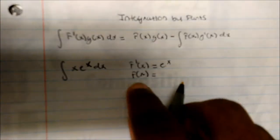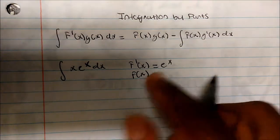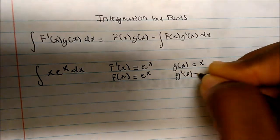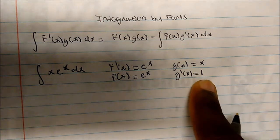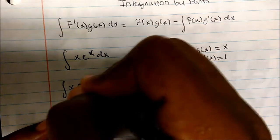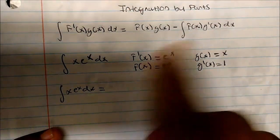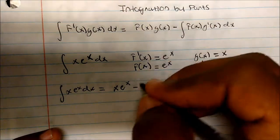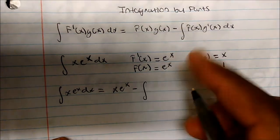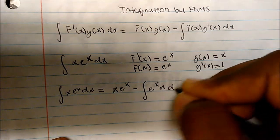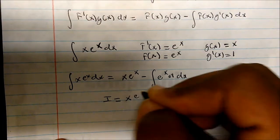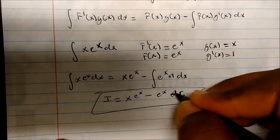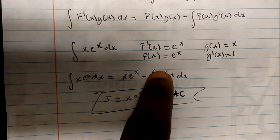f of x is the antiderivative of whatever you chose to be your derivative. The antiderivative of eˣ is just eˣ. And g of x will be x, so when I take the derivative of x, I get 1 — notice the simplicity. So the integral of x·eˣ dx equals f(x)·g(x) minus the integral of f(x)·g'(x) dx. That's x·eˣ minus the integral of eˣ·1 dx, which gives us x·eˣ minus eˣ plus C.